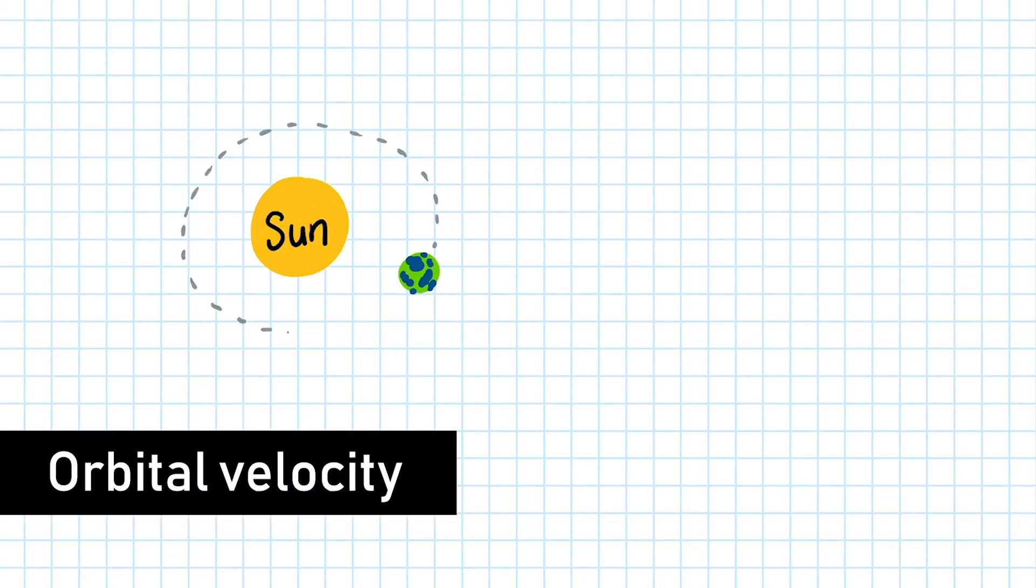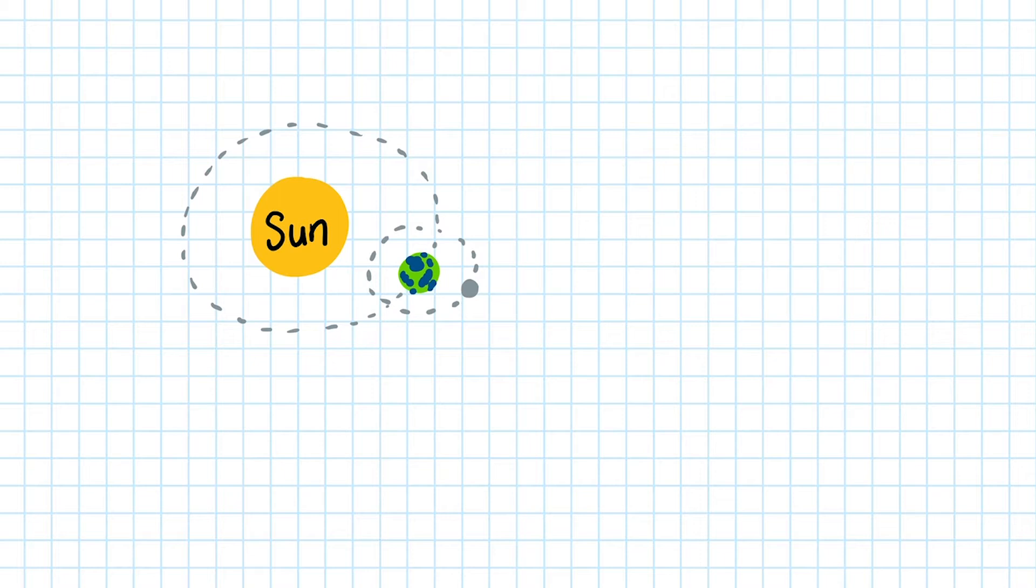The Earth orbits the Sun just like the Moon orbits the Earth. Although it's not exactly circular, we can make the approximation that the Moon's orbit is indeed circular.